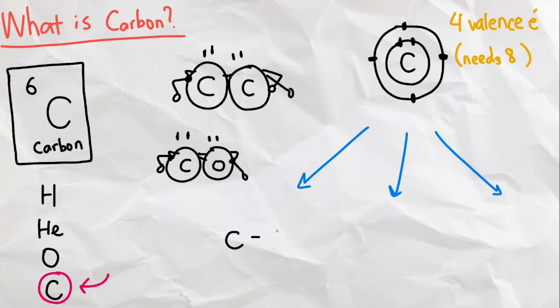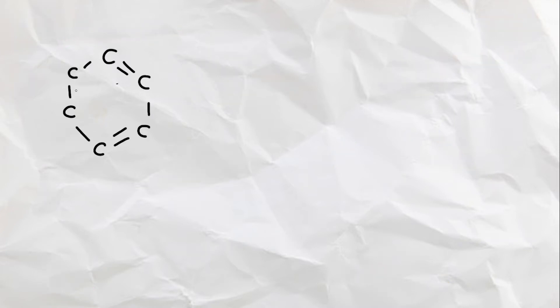Carbon can either bond with four other atoms, bond with three other atoms with a double bond between one of them, or bond with two other atoms with two double bonds. Six carbon and six hydrogen atoms can form into a ring shape, or benzene.